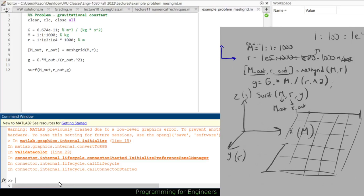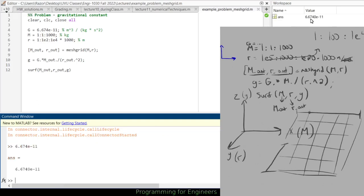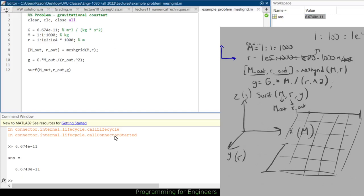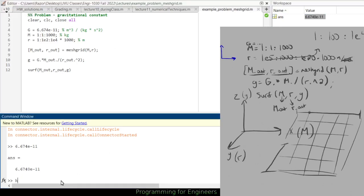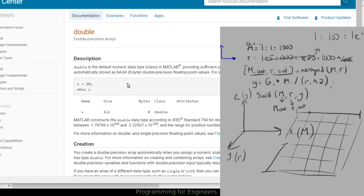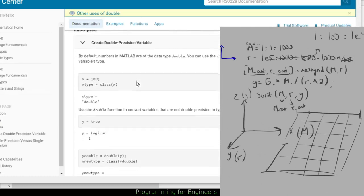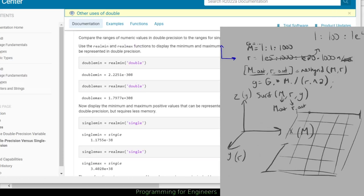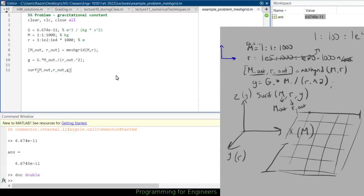Question is 6.674e minus 11. Yep, we're fine with that. Just wanted to double check because if I look up doc for double, I do have a minimum size, right? But it's e to minus 308, so no problem there.